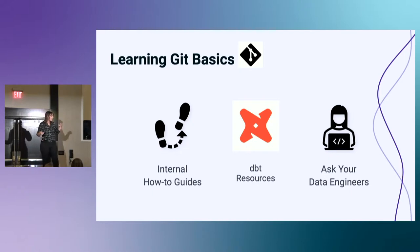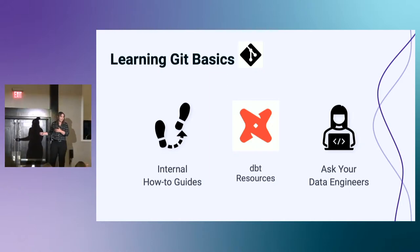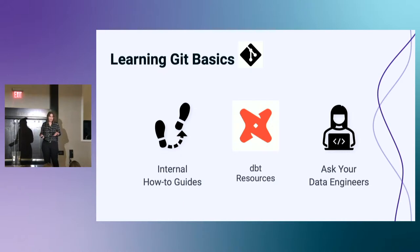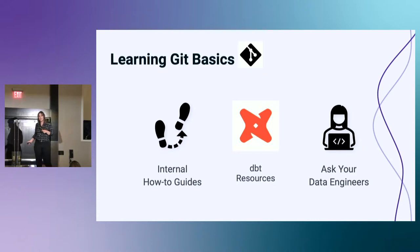We have a lot of how-to guides — like, these are the steps to do. And when we get stuck, we just go ask our data engineers. If we get some crazy thing and we blew up our local environment, we have those resources to ask them for help. I also like DBT's resources a lot because they're a little bit more specific on Git to what you're going to see when you're building models.